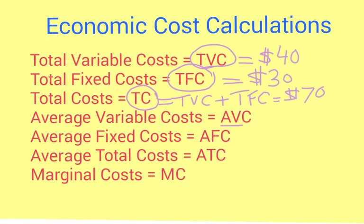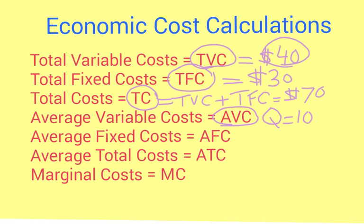The next cost is average variable cost, which is simply total variable cost divided by the number of products we make. Let's say we produce a quantity of 10 products. Our total variable cost is $40, so our average variable cost is 40 divided by 10, which equals $4.